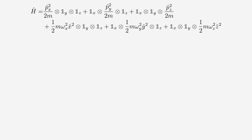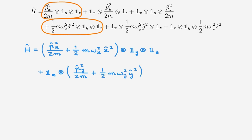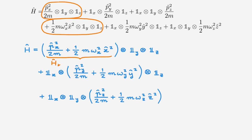We can rewrite this Hamiltonian in another form that will prove really convenient. We can group all the terms that act non-trivially along the x direction — the kinetic energy term and the potential energy term — to get a combined x-dependent term, together with identity operators for the y and z directions. We can do the same for the terms acting non-trivially along y and along z. We now recognise the x-dependent term as the quantum harmonic oscillator Hamiltonian of a particle moving in the x-spatial dimension, and similarly for y and z.